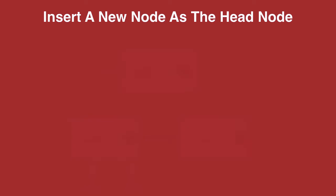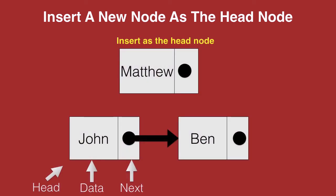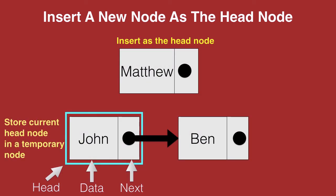So before we remove John as the head node we should first store John in a temporary node. Once we do that we can remove John as the head node and make Matthew as the new head node. So now all that the next of Matthew needs to do is point to the temporary node and that completes the linked list. So now the next of Matthew points to John and the next of John points to Ben.